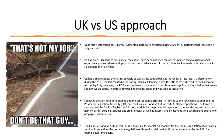Following that, and the nationalisation of Northern Rock — a large British bank — the FSA actually ceased to exist. The Prudential Regulation Authority and the Financial Conduct Authority then started operations in its place. The PRA is a subsidiary of the Bank of England and is responsible for prudential regulation of deposit-taking institutions, building societies, credit unions, insurers, and investment firms which might originate or propagate systemic risk. The Financial Conduct Authority is responsible for market functioning and the conduct of regulation for all financial services firms, and the prudential regulation of firms not supervised by the PRA, such as asset managers.